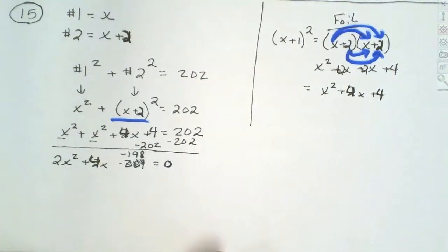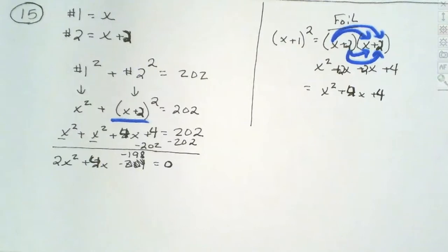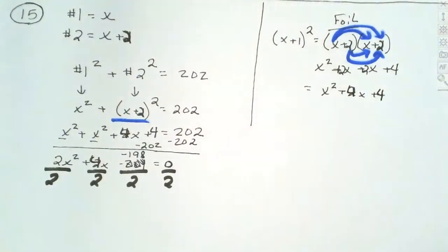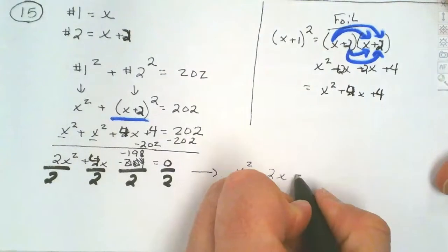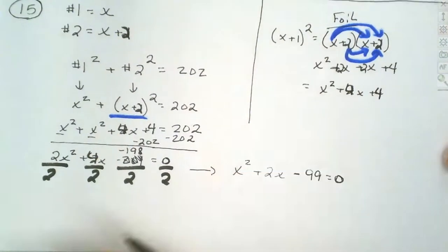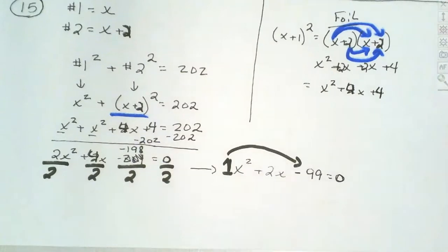Now we've got it set to zero. We look at all our numbers — we've got a 2, a 4, and a minus 198 — and they're all divisible by 2. So we divide everything by 2. That gives us x squared plus 2x minus 99 equals zero. No grouping needed. First times last is negative 99. We've got a negative, so one is positive and one is negative.